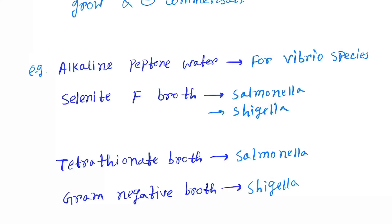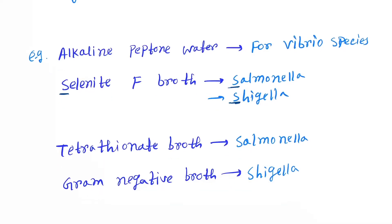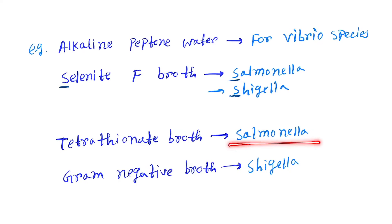A useful mnemonic: S for selenite broth, S for Salmonella, S for Shigella. Another example is tetrathionate broth, also for Salmonella, and GN broth for Shigella.